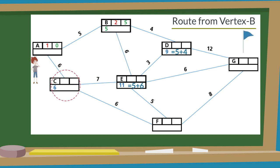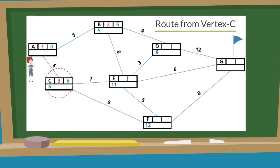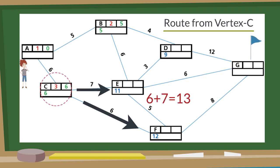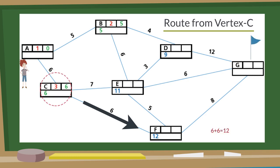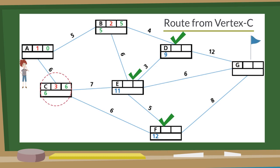Now the same process will be repeated for vertex C. Vertex C is the source, and it is directly connected with three points: A, E, and F. The final value of vertex A is already decided. The working value of E from vertex C is the final value of C plus the distance from C to E — it is 13. But E is already having a working value lesser than 13, so it will not be changed. Similarly, the working value of F is the final value of C plus the distance from C to F — it is 12. As the final values of A, B, and C are already decided, we consider the working values of D, E, and F only. D has the least working value, so it becomes its final value and the source for the next process.